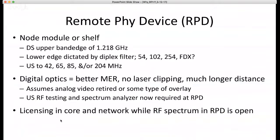With a 204 MHz return, the attenuation is much more significant, and you also have temperature variation — you'd need to consider having AGCs in your return path. It becomes a pretty significant problem. R-PHY plus zero means remote PHY node plus zero amps, so you have limited coax. By doing Remote PHY, we have better MER readings because you're putting the PHY right there — no analog optics, which usually leads to lower MER.